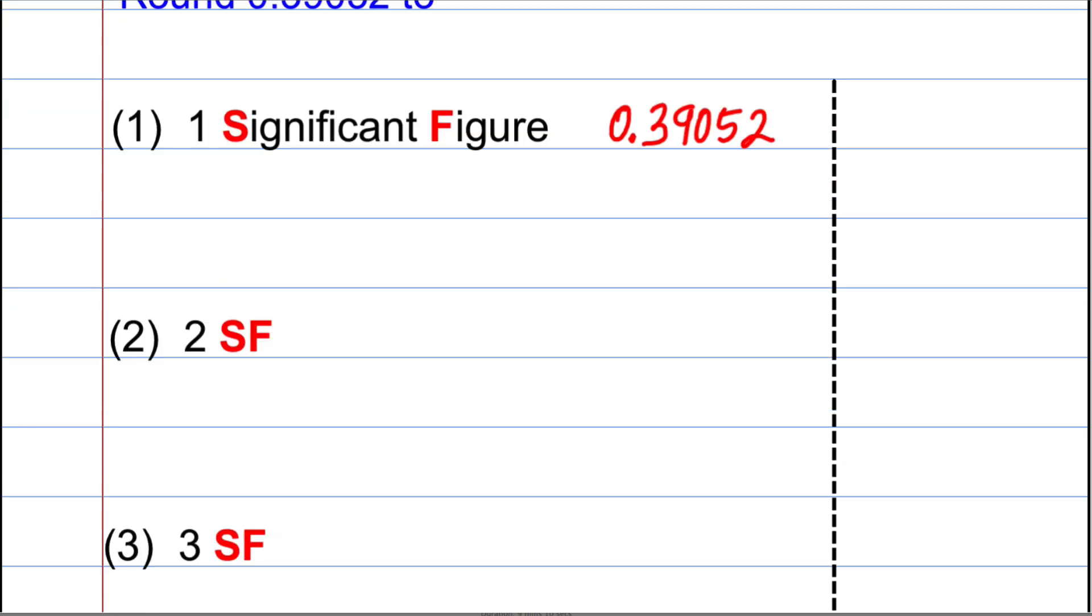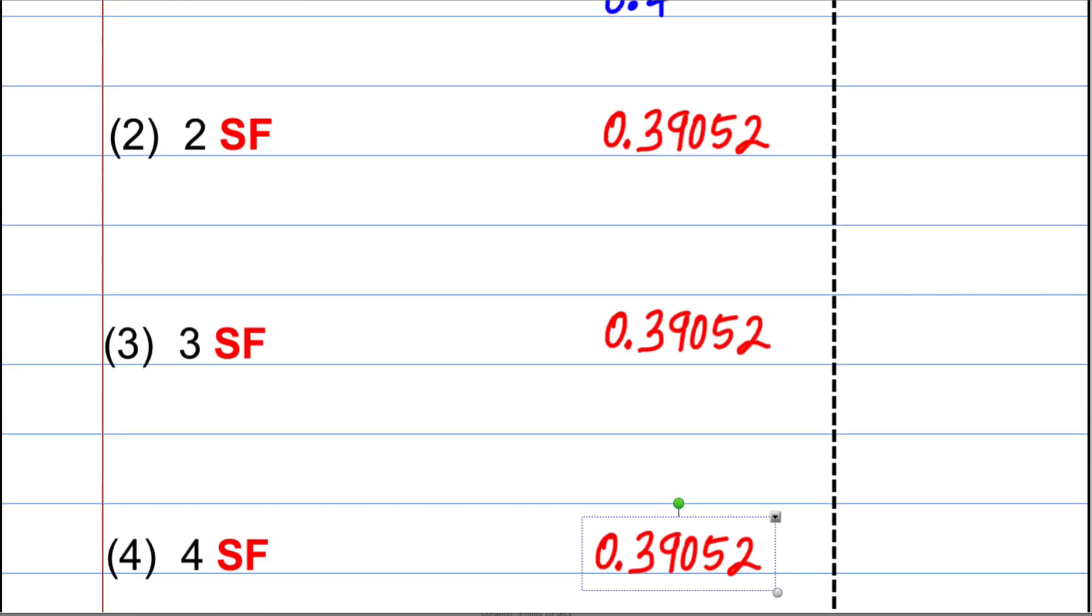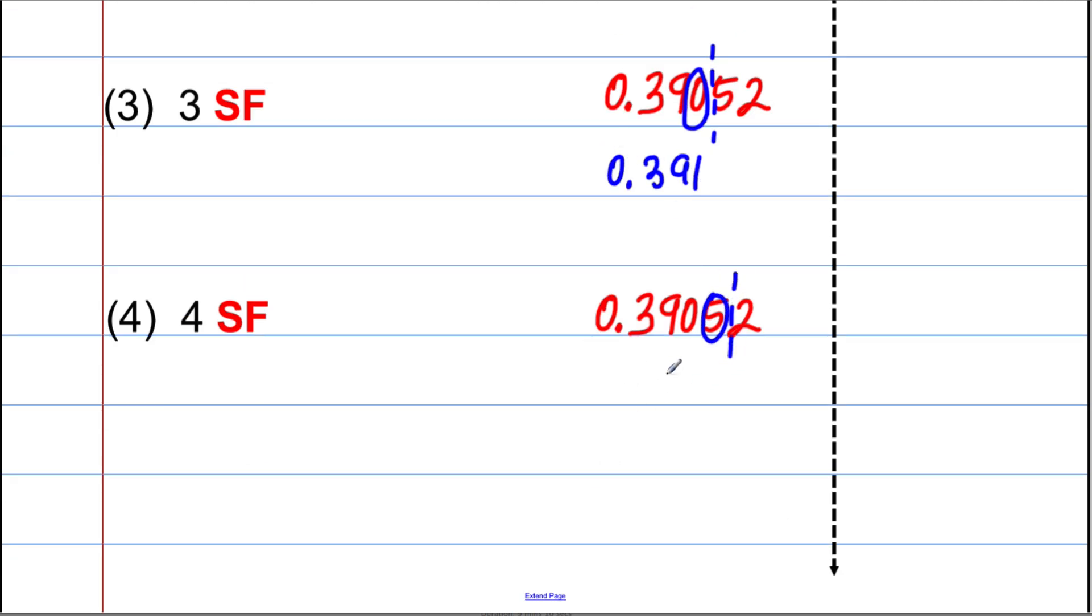So let's round this here to one significant figure. The first significant figure is not the zero. It's the three. Because we've got a nine, we round up. The answer is 0.4. Second significant figure. The second significant figure is going to be the nine. So that's the one we focus on because we have a zero, we round off 0.39. The third significant figure does count. The zero in this case does count. And because we have a five is 0.391. And to four significant figures, the fourth significant figure is the five. Because we have a two, we round off 0.3905.